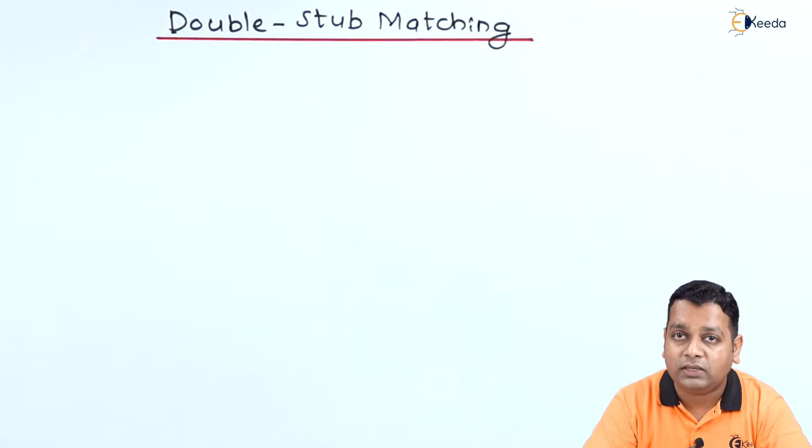We further derived the line impedance, the line admittances, and have also been introduced to the very popular graphical method, that is use of Smith chart to find solutions for transmission line problems. In the previous videos we have also solved certain problems making use of Smith chart.